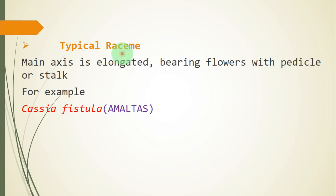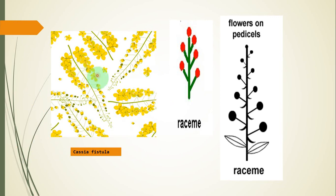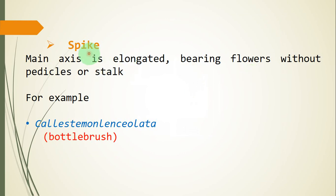A typical raceme is the blueprint of racimose: the main axis is elongated bearing flowers with pedicels or stocks. For example, Cassia fistula, commonly called Amaltas, belonging to the family Caesalpiniaceae. In a simple raceme, the main axis grows and produces flowers until the last flower at the apex. All flowers are pedicellate — the stock of the flower is called pedicel, and those flowers bearing a pedicel are called pedicellate.